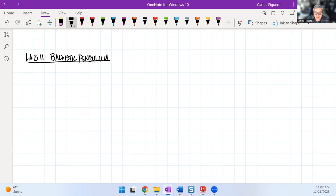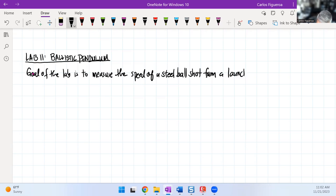Some of it we haven't covered. What we'll do here is that ultimately, the goal of the lab is to measure the speed of a steel ball shot from a launcher. In previous labs we did it with a plastic ball, but now we just want to measure it. And so what you're going to see here is that we're going to use two methods.